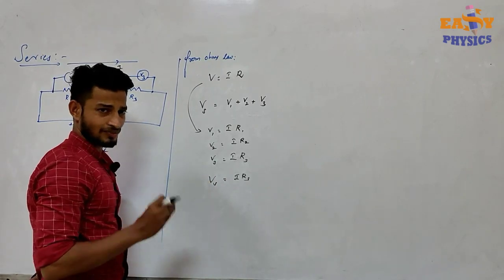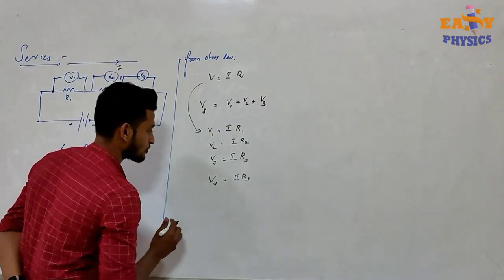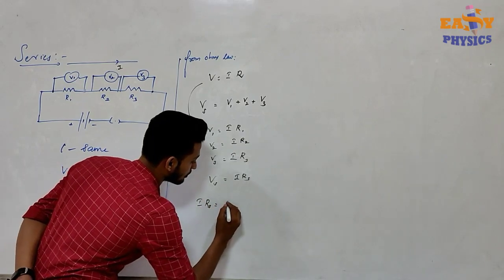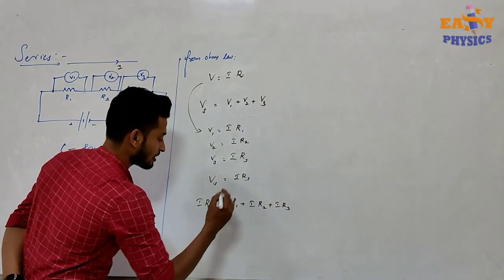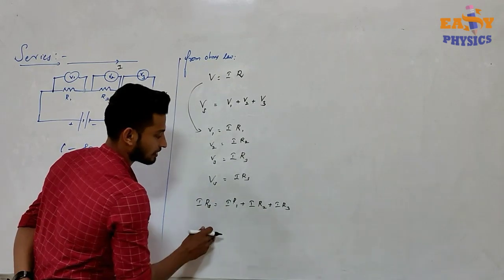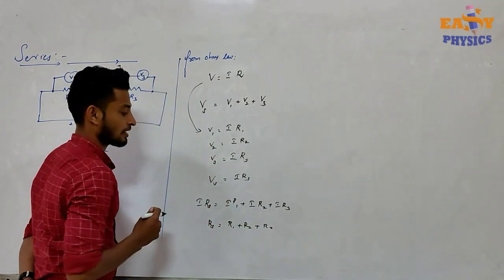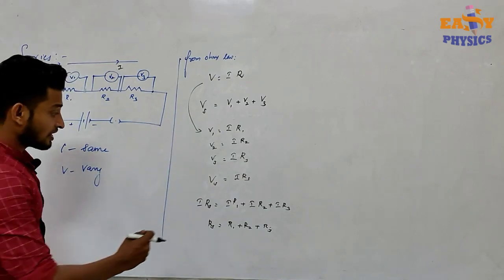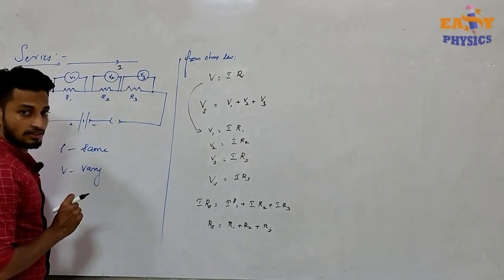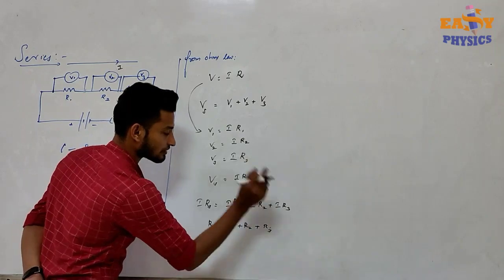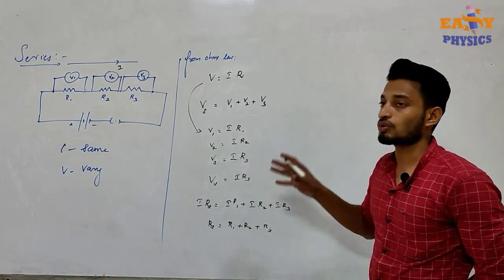The effective total resistance is Rs. Substituting the values: I·Rs equals IR1 plus IR2 plus IR3. Cancelling I from both sides, we get Rs equals R1 plus R2 plus R3. The conclusion is: if the resistors are connected in series, the effective resistance Rs is equal to the sum of the individual resistors.